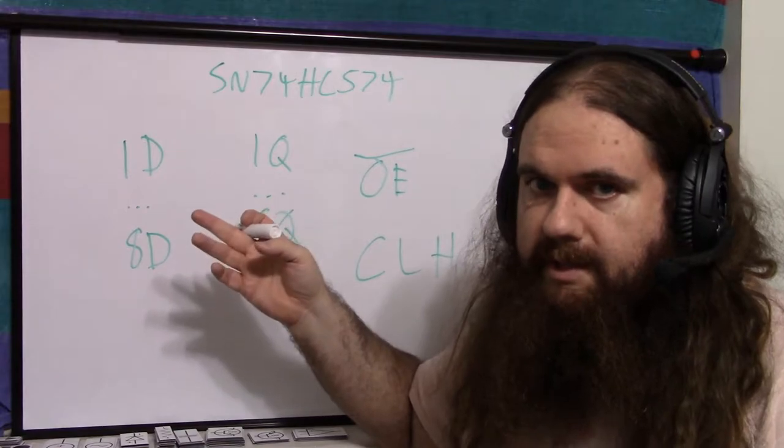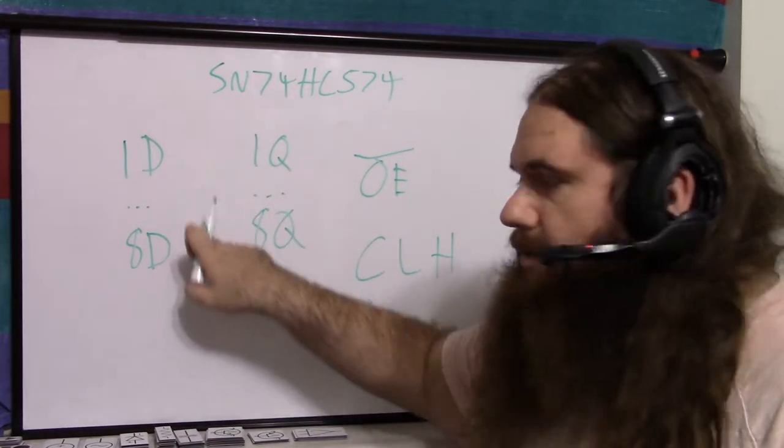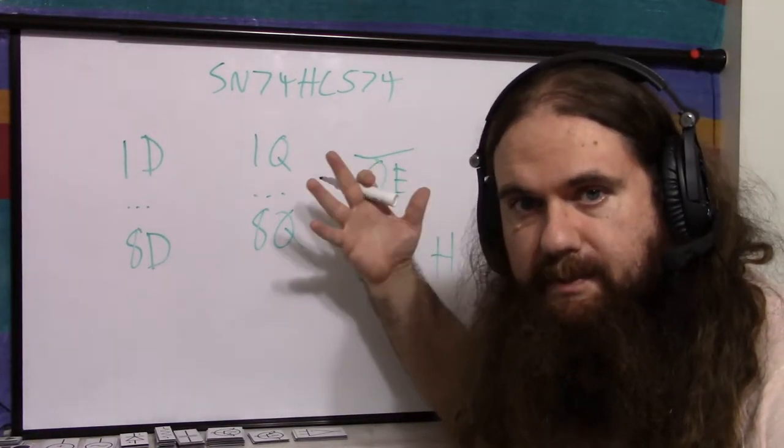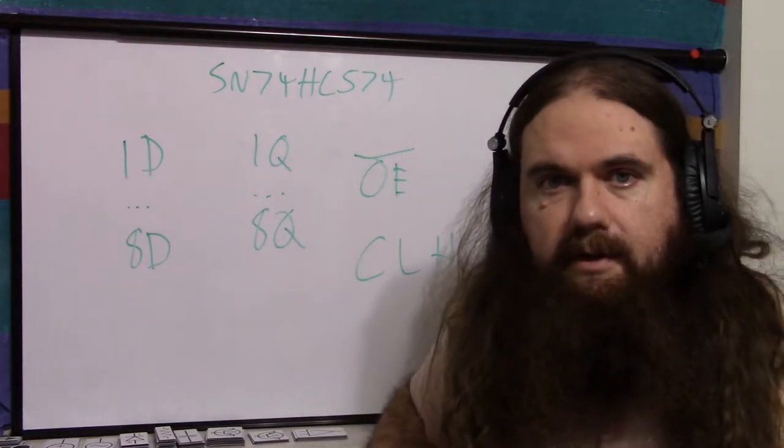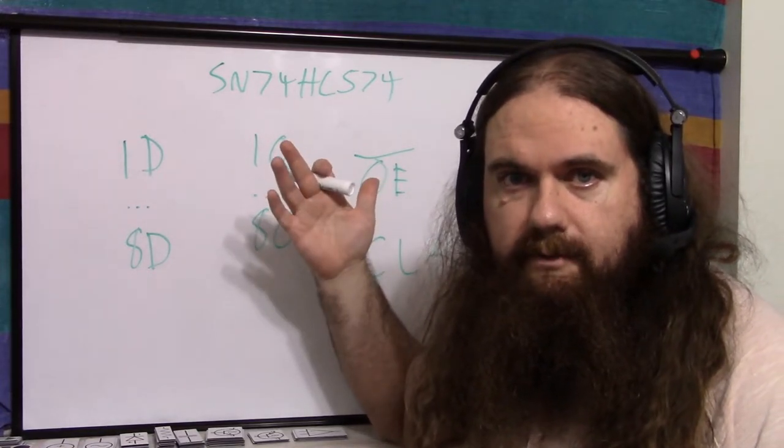The operation of the chip is incredibly simple. Every time the clock pulses high, it sets the outputs to the inputs. And then if output enable is low, it's putting out output. If output enable is high, the outputs are off and they're all high impedance. That's it. So input on the clock and output on or off.